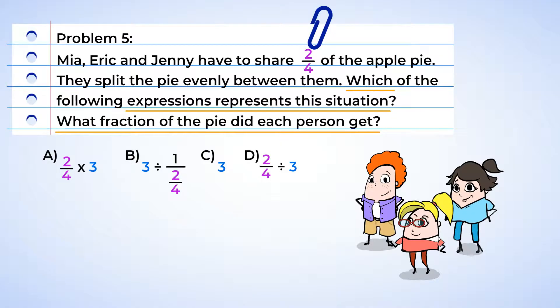Which of the following expressions represents this situation? And what fraction of the apple pie will each person get? Well, first, let's find the correct expression so we can solve it. We can begin by finding the total in this situation. The amount of pie that needs to be partitioned is the total, and that is two-fourths. Now we want to see what operation we're going to use. Well, the total amount of pie left is going to be equally shared by Mia, Eric, and Jenny, and this tells us to divide. Now, how many people is it going to be divided between? Three. So we need to find the expression two-fourths divided by three. And there it is. Let's circle it.